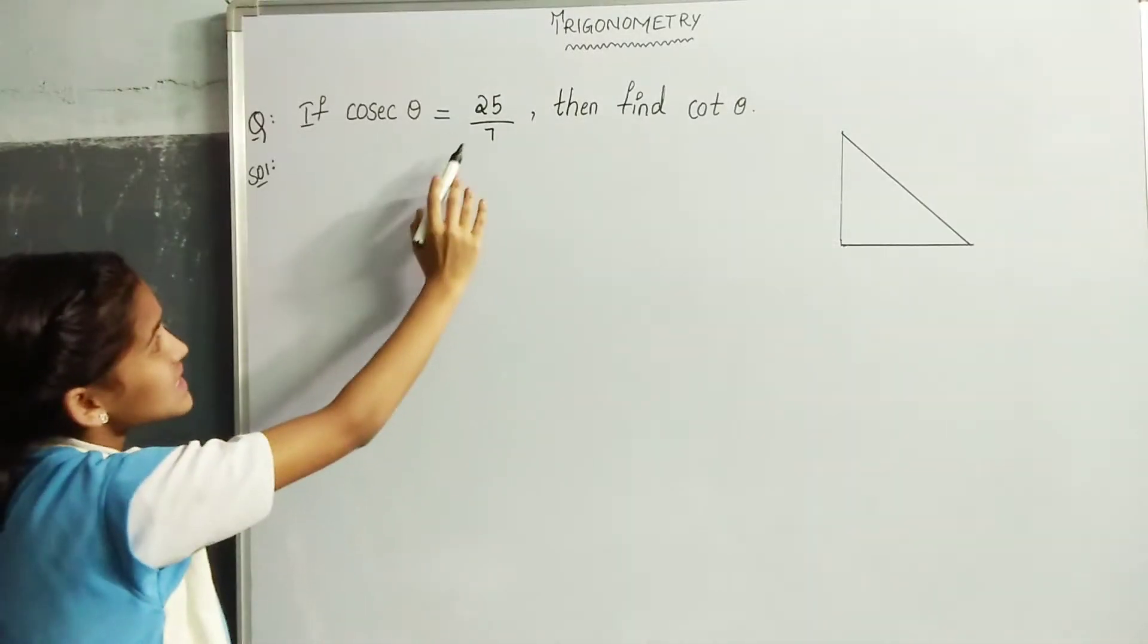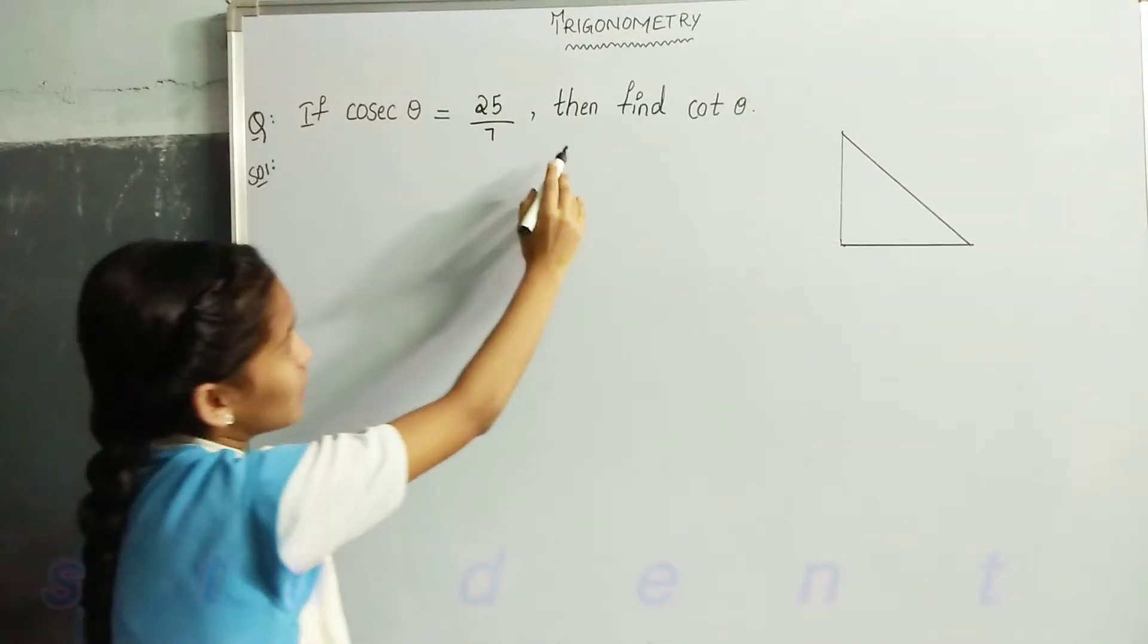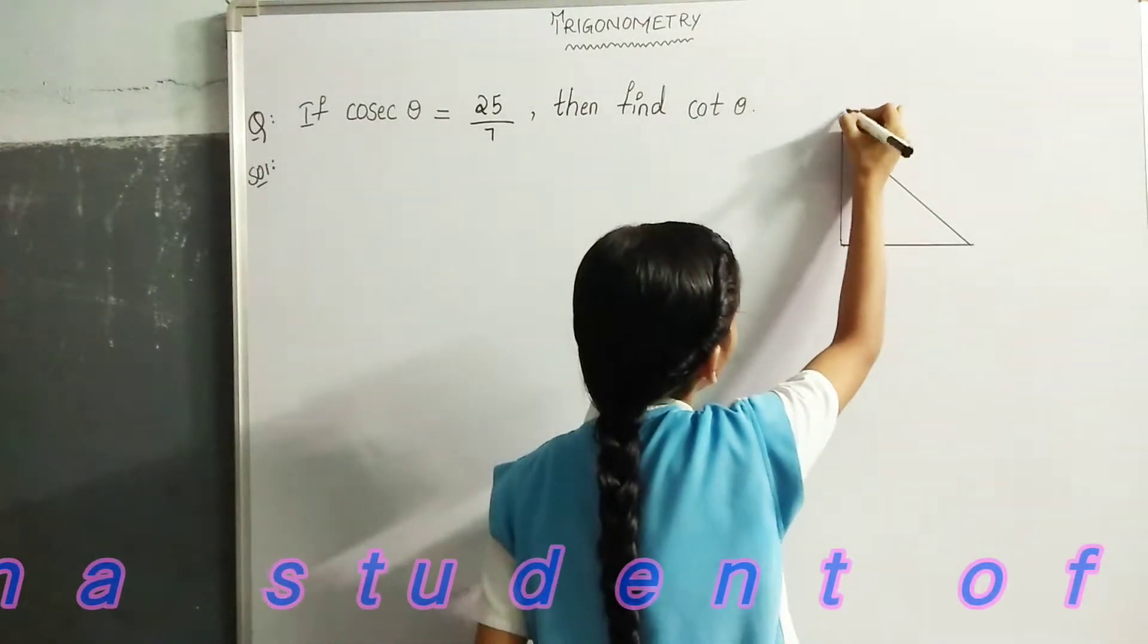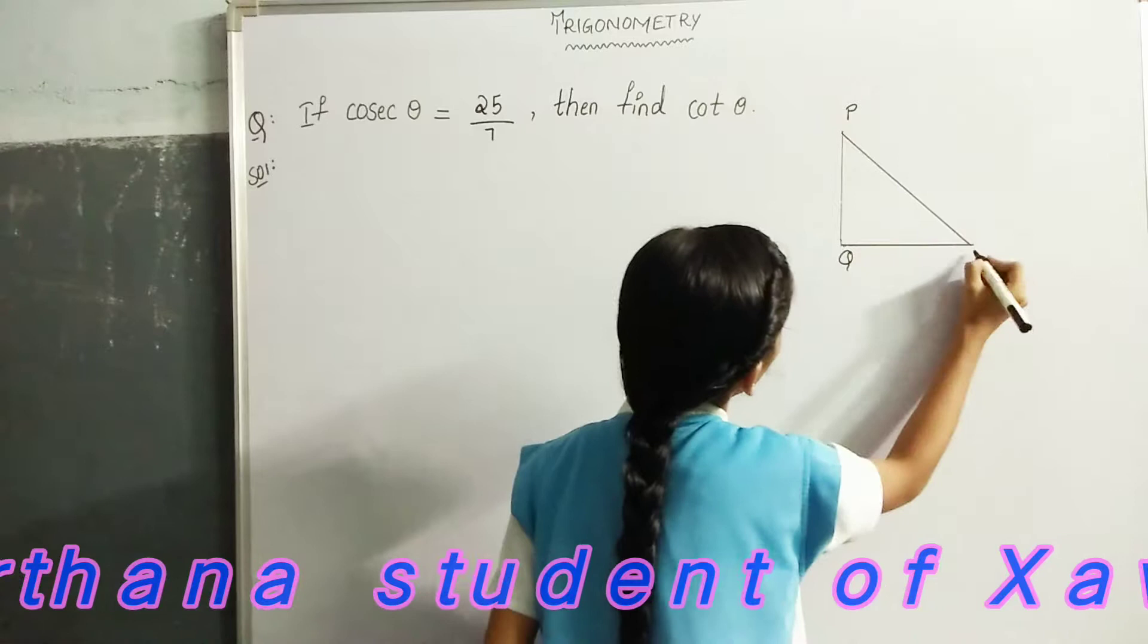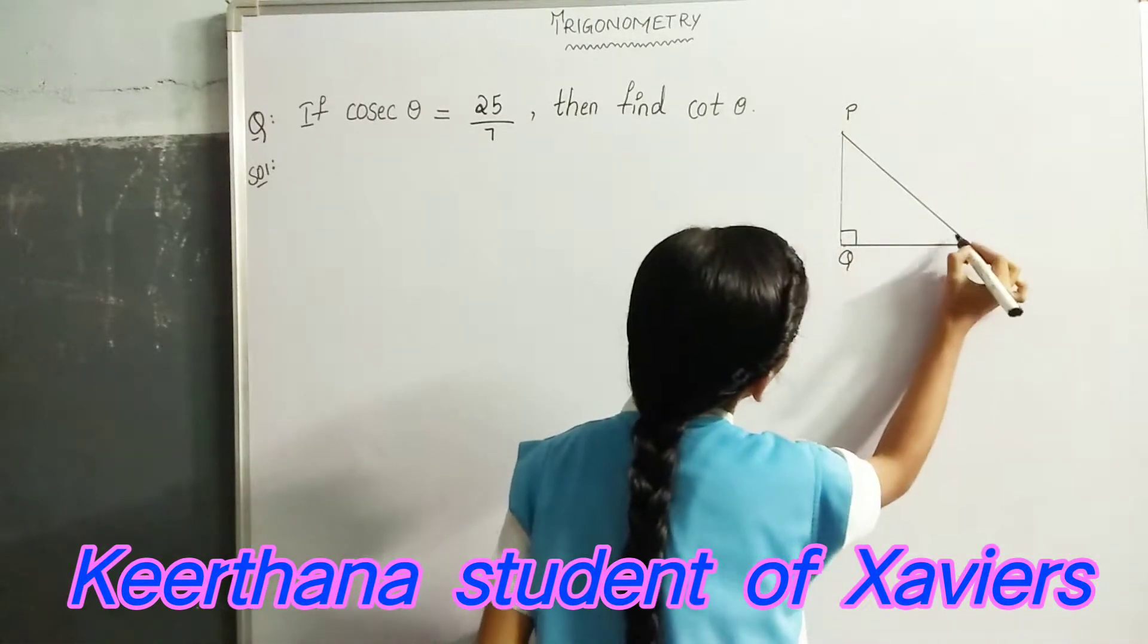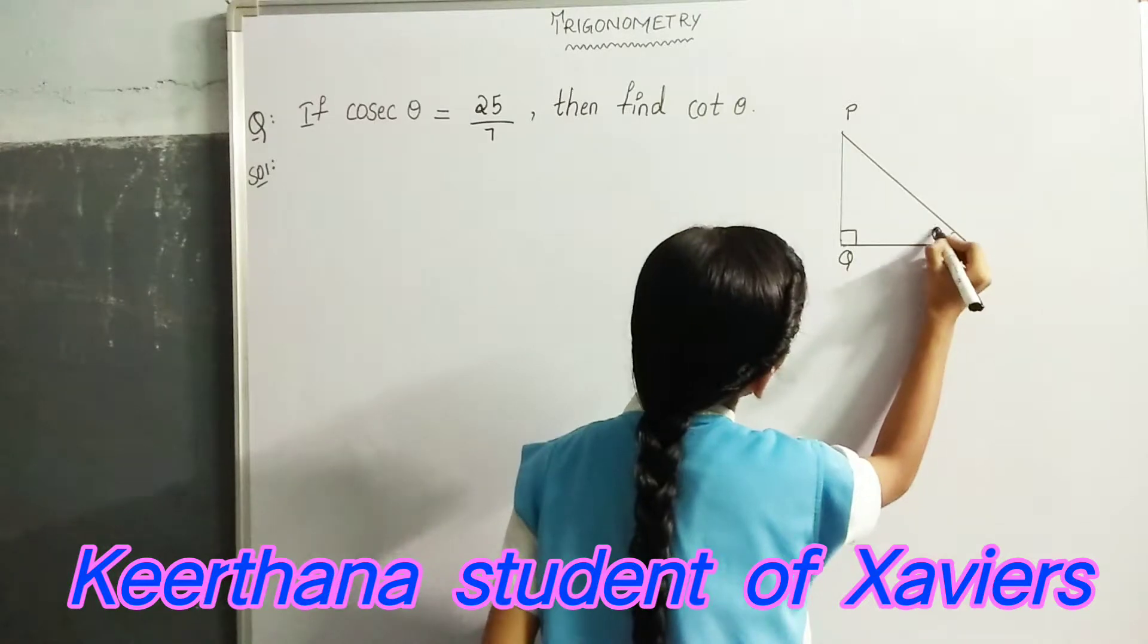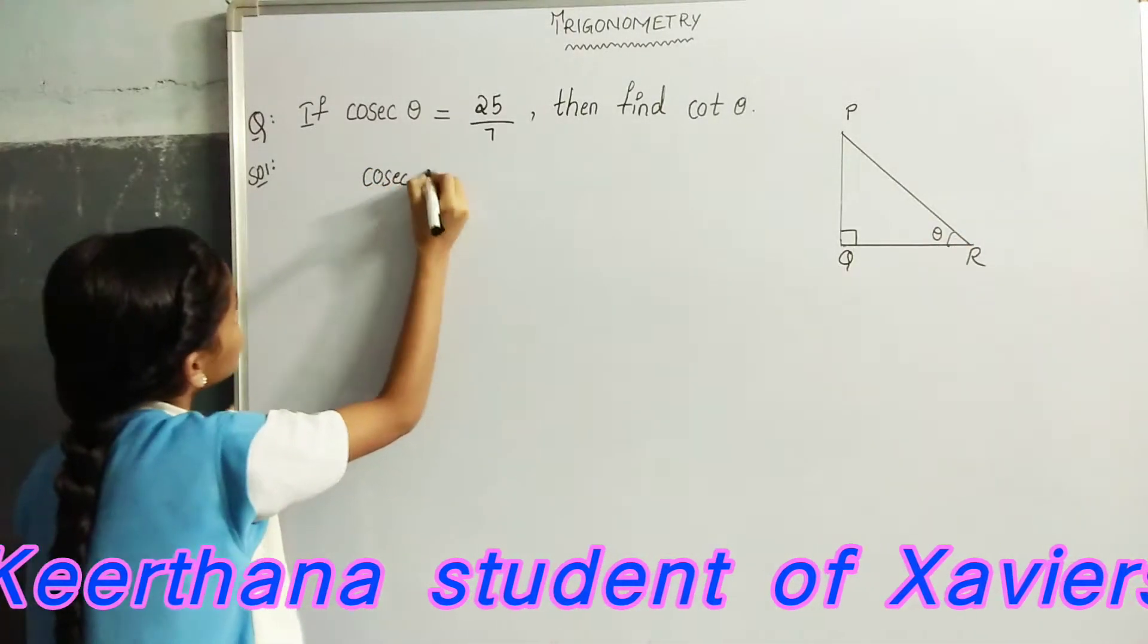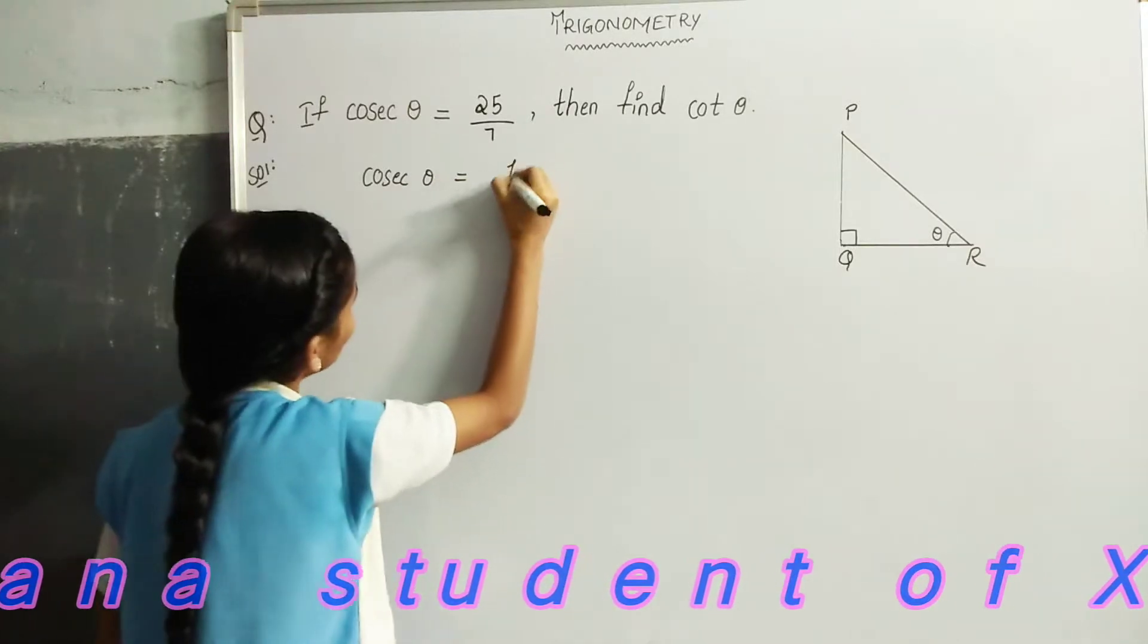If cosec theta is equal to 25 by 7, then find cot theta in right angle triangle PQR. Right angle is at Q and the angle theta is at R. We know that cosec theta is equal to